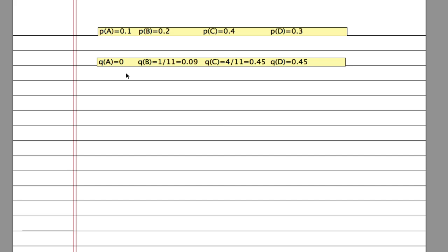Okay, let's have a closer look at the distributions that we got in the previous experiment. So the distributions that were associated with the wheel, or what I would call the true or underlying probabilities, are these: A is 0.1, B is 0.2, C is 0.4, and D is 0.3.